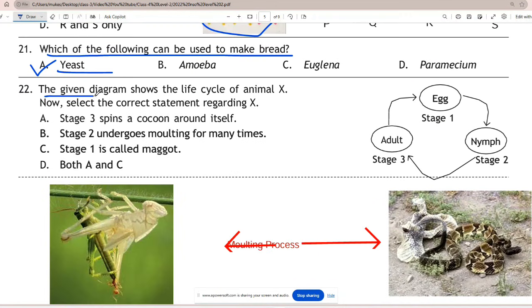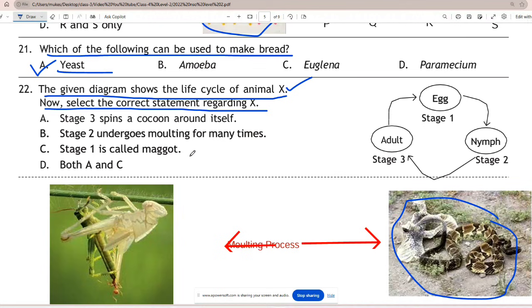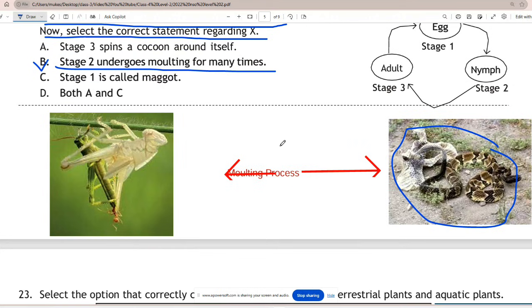Question 22: The given diagram shows the life cycle of animal X. Select the correct statement regarding X. The diagram has four stages: egg is stage 1, nymph is stage 2, and adult is stage 3. The question asks to select the correct statement regarding animal X. The correct answer is B - stage 2 undergoes molting for many times. Many animals undergo molting multiple times, including cockroaches, amphibians, hermit crabs, and arachnids. Molting is the process of shedding and replacing old skin, feathers, fur, or exoskeleton with new growth.